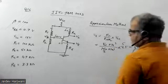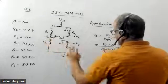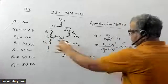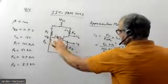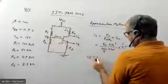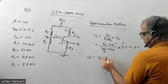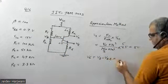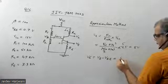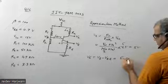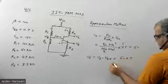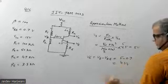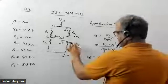Once I know VB, I can find VE. VE equals VB minus VBE. VB is 5V and VBE is 0.7V, so VE comes out to 4.3 volts.